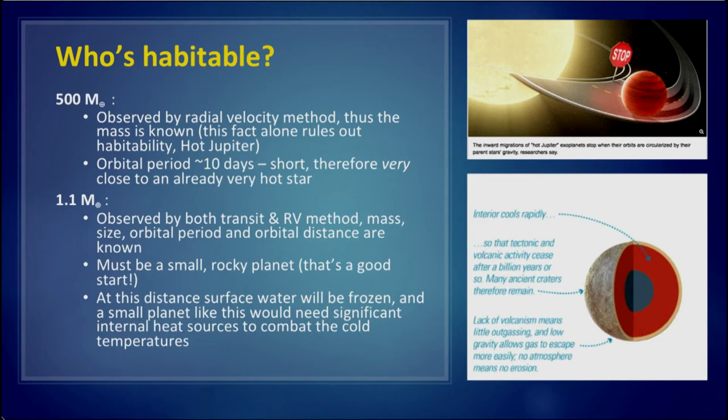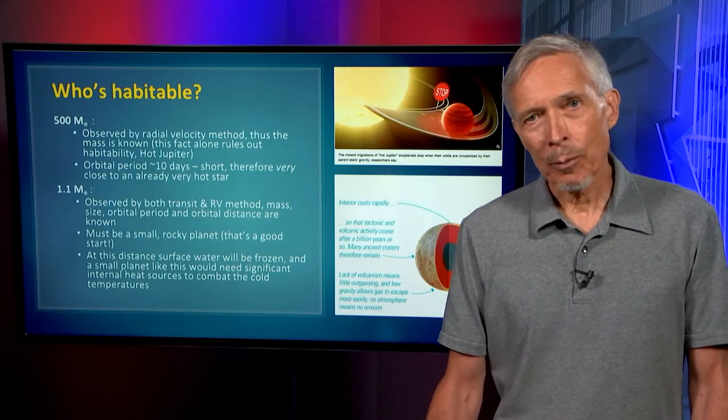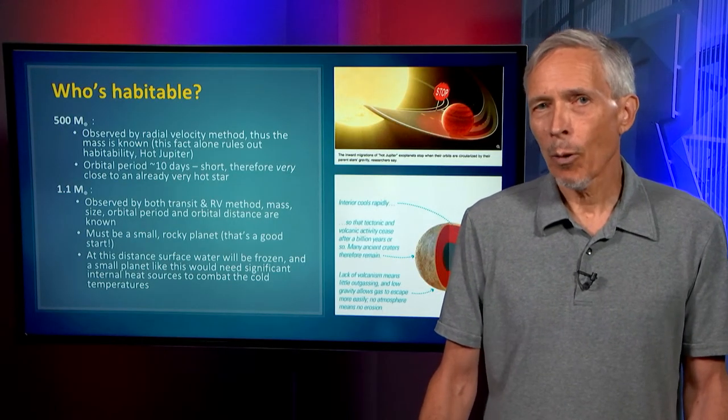Measured by both methods, with mass and size, we get a mean density, and that would put it in the rocky range. So it's still looking like a good prospect. But at this distance, based on a simple calculation, surface water would be frozen. A small planet like this would need substantial internal heat sources to battle against those cold temperatures and create liquid water.